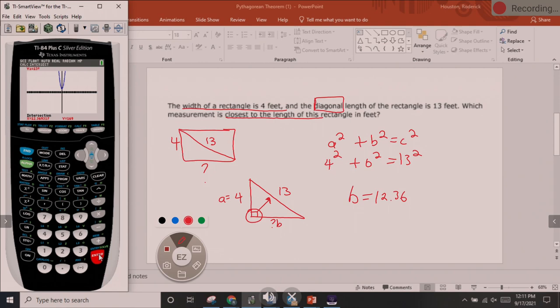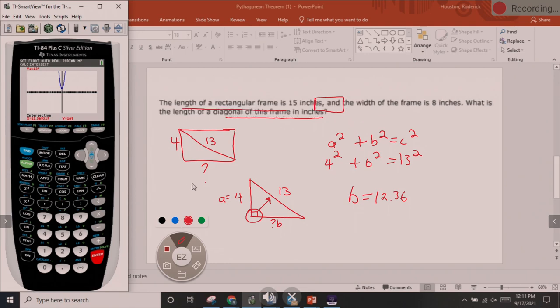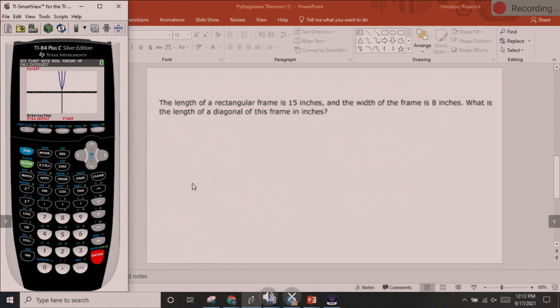Do we have any questions? No questions? Let's continue. Here's the next example. It says the length of the rectangular frame is 15 inches, and the width of the frame is 8 inches. What is the length of the diagonal?